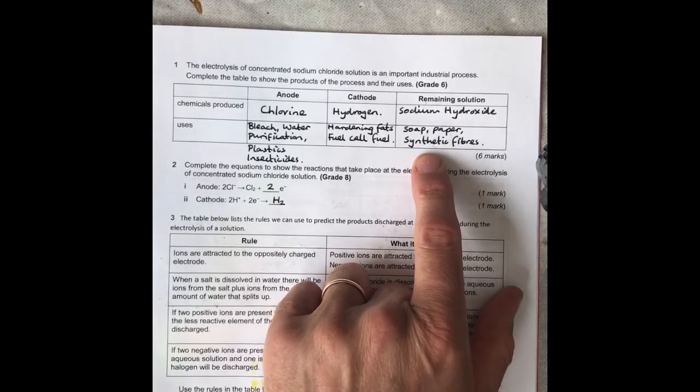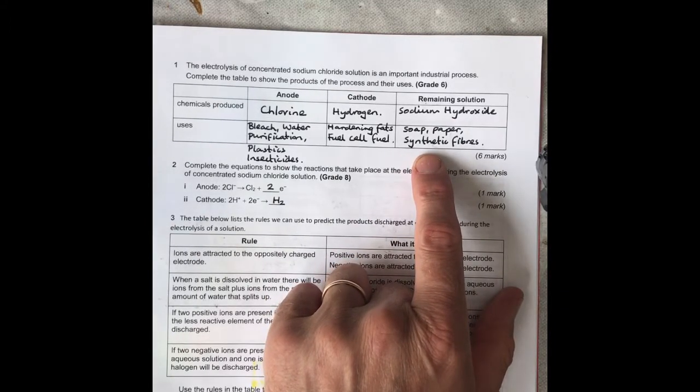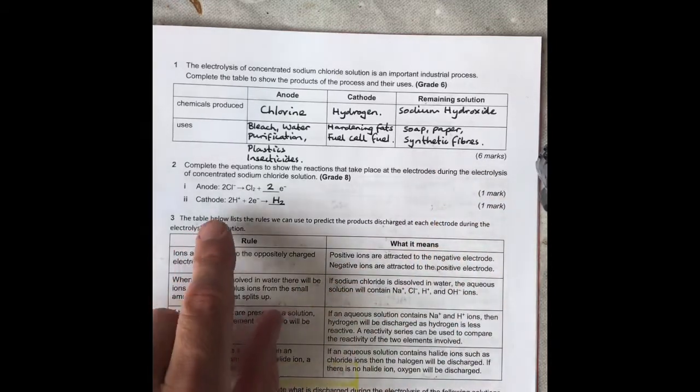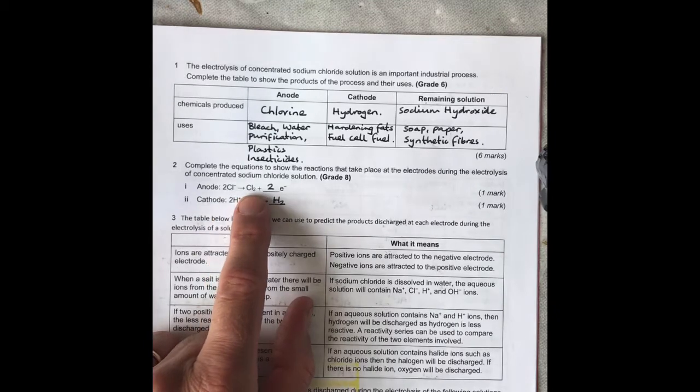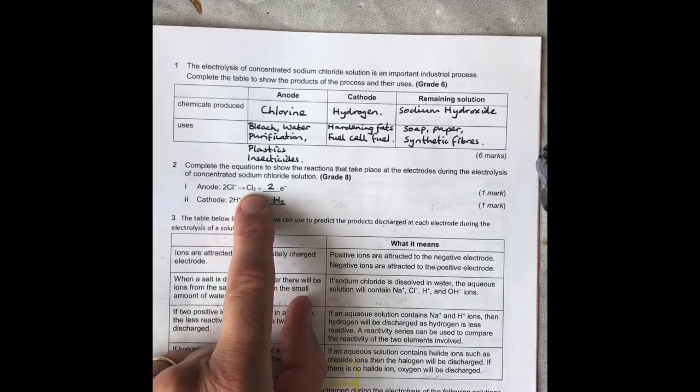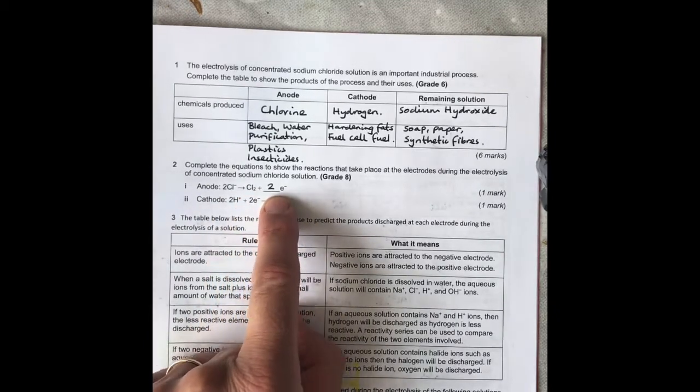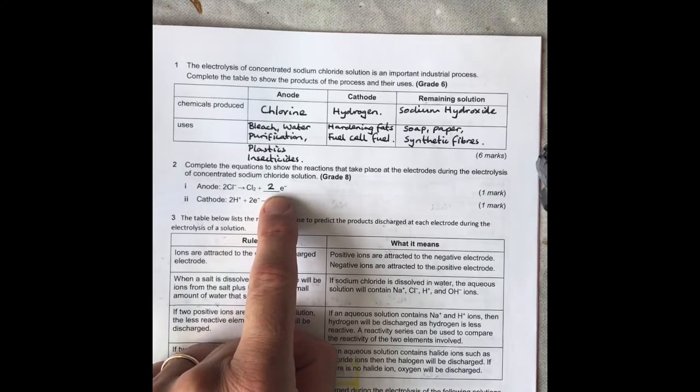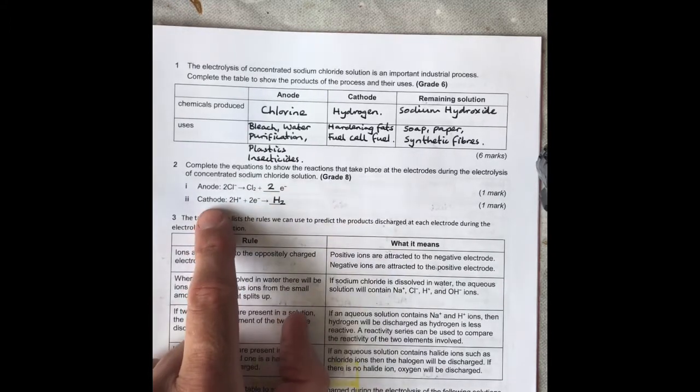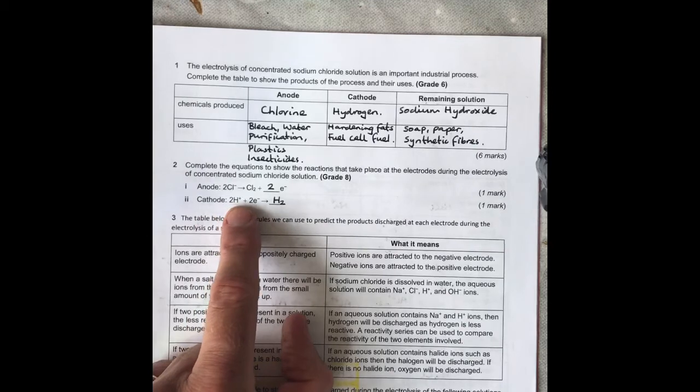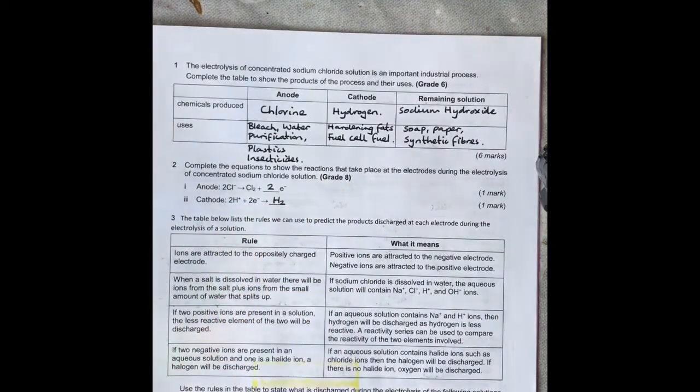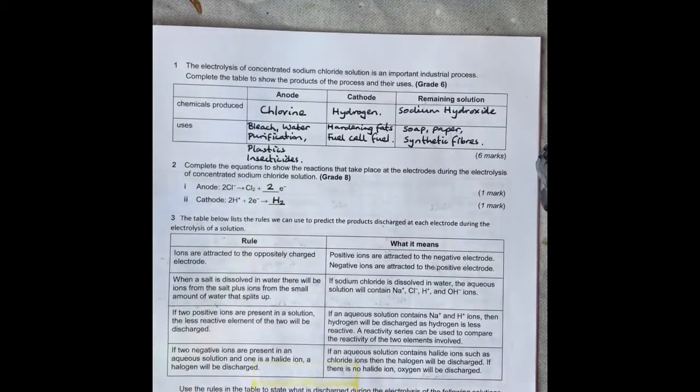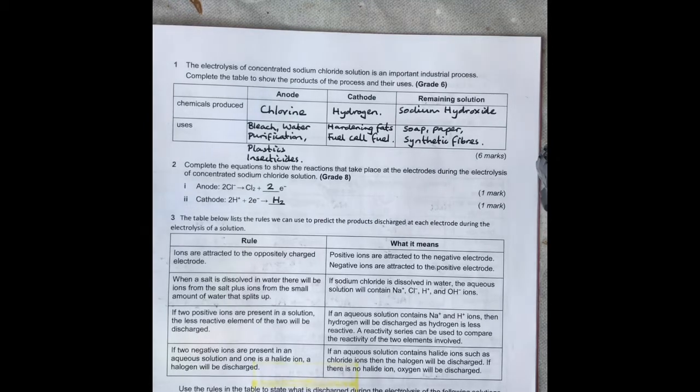Completing the two half equations: at the anode, two chlorine ions form chlorine gas and they lose two electrons. At the cathode, two hydrogen ions gain two electrons and they become hydrogen gas. You're given a series of rules here for electrolysis and then asked to apply them.